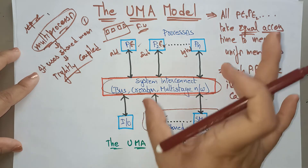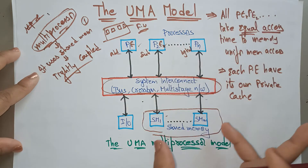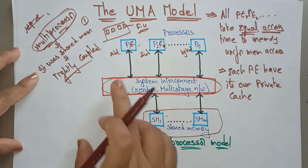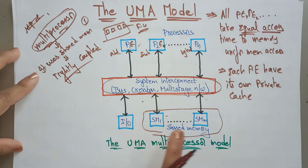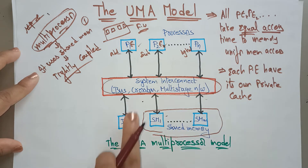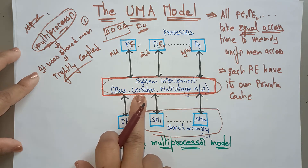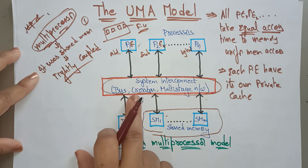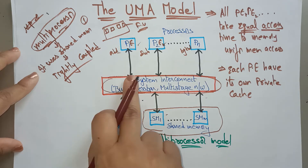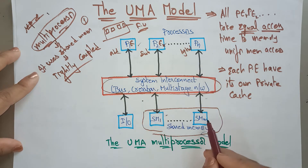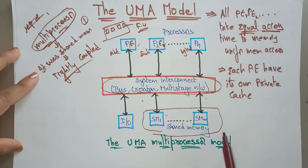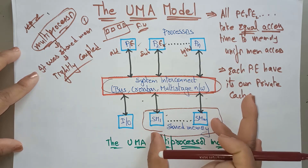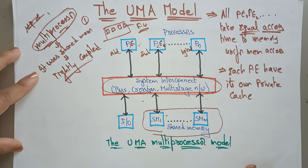Each processing element accesses the shared memory and IO with the help of the system interconnection. An important point: all processing elements take equal access time to memory — equal access time to access the memory. That's why we call it Uniform Memory Access.